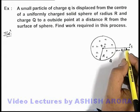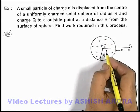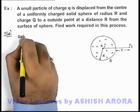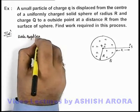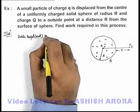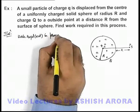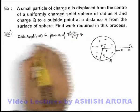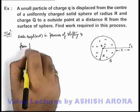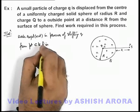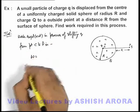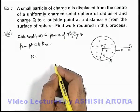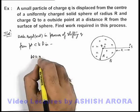We are required to find the external work done in the process. We can directly write: work required in the process of shifting q from point C to P. This can be directly written as external work equals final energy minus initial energy.